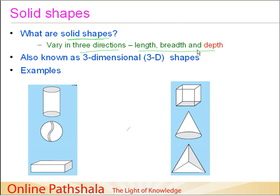Now since they are varying in three directions, we call them as three-dimensional shapes. This is another way of telling it. And here are the examples that you would find in your day-to-day lives. This one is a cylinder.